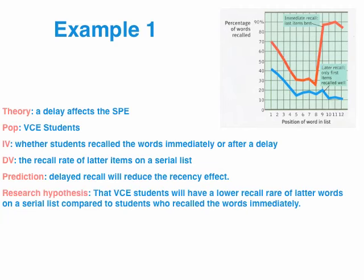Put all those together — it doesn't really matter the order. What I'm looking for as an assessor is that students have ticked off those four things: population, IV, DV, and the prediction. So: 'VCE students will have a lower recall rate of latter words on a serial list compared to students who recalled the words immediately.' Check it before you finish: have you got your population? Yes — VCE students. Have you made a prediction? Yes — they're going to have a lower recall rate, the delayed group. Where's the IV? Two groups — immediate recall and delayed recall. Where's the DV? The word recall rate.